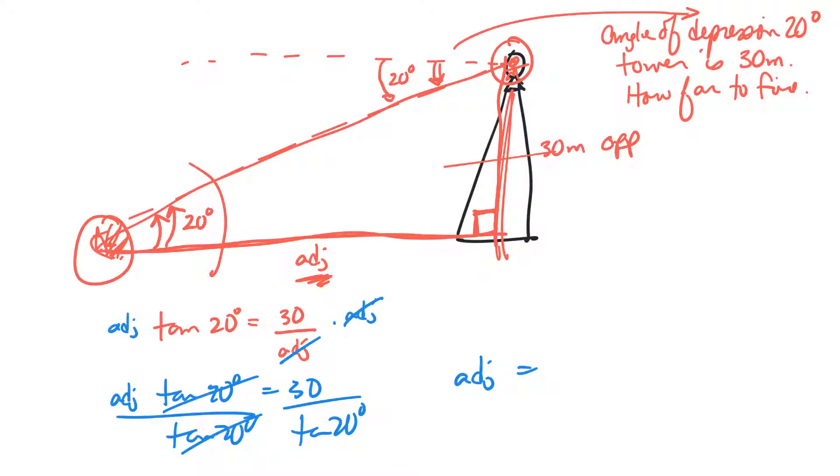And so the adjacent side is equal to, let me see on my calculator here, 30 divide tangent of 20. Go. 82.4. So the tower and the fire must be 82.4 meters away. Hopefully that helps you with those two questions.